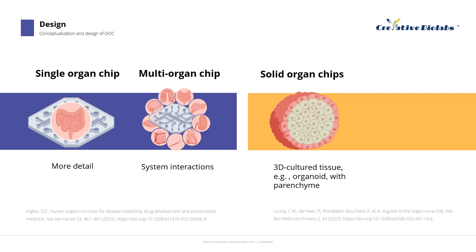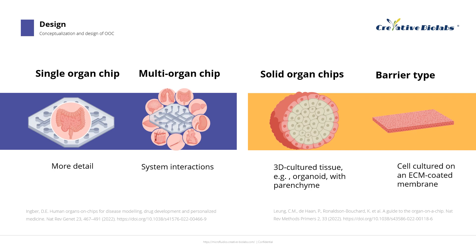The second category consists of barrier tissue chips, where the device architecture supports cells forming a natural barrier between fluidic compartments. This allows the study of selective transport processes across barriers. These structures are commonly found in intestinal, lung, and skin OOCs.